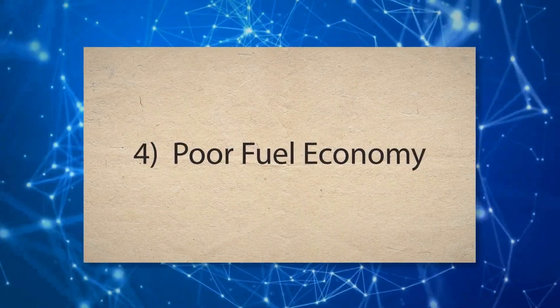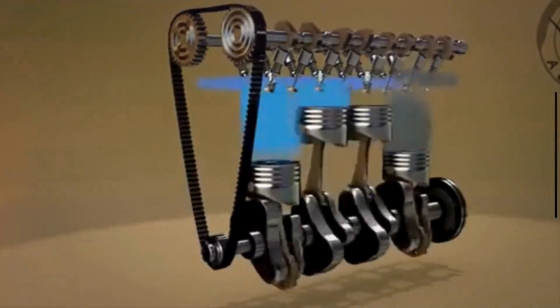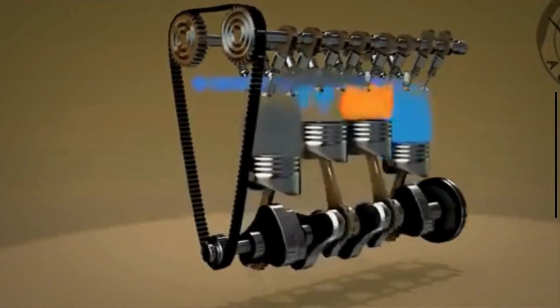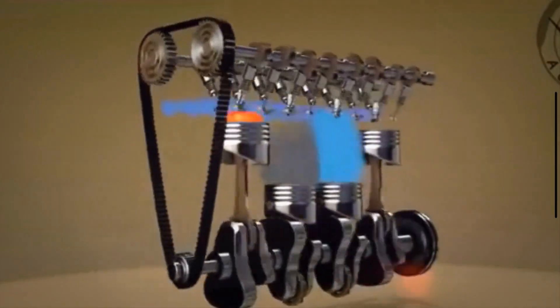4. Poor fuel economy. When the purge valve is not functioning correctly, it can lead to improper fuel vapor recirculation. This can cause the engine to run rich or lean, both of which can reduce fuel efficiency.